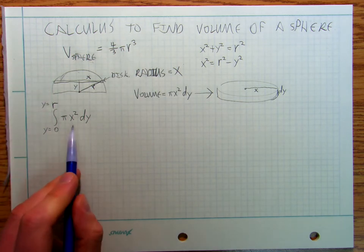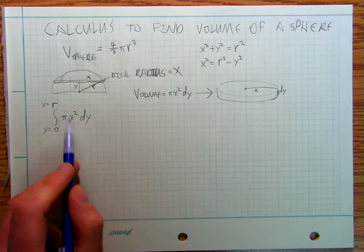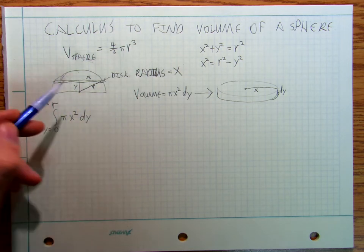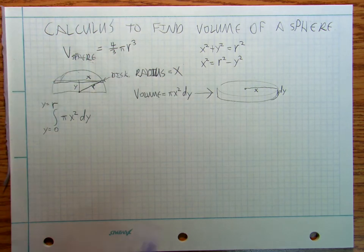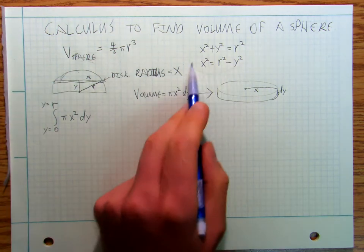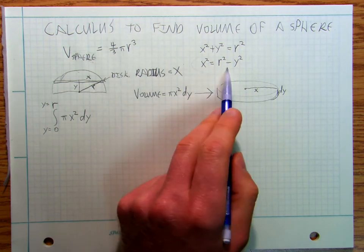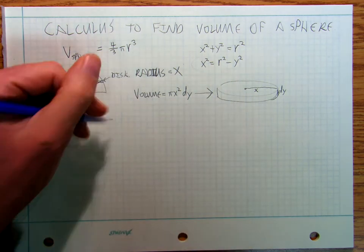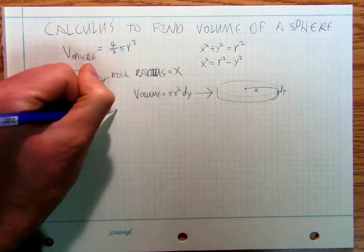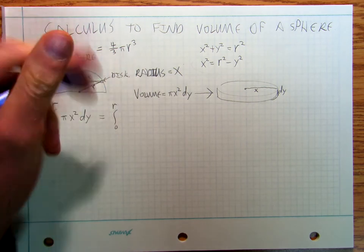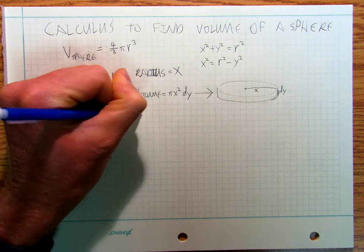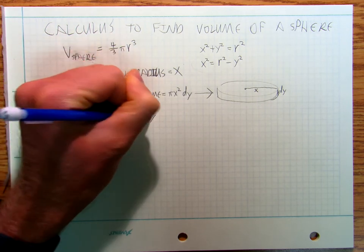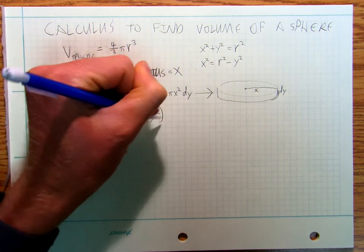And the radius of my disk, and so there's the volume of that disk, Pi x squared times dy, times that little bit dy, and then I can replace my x squared with this up here. So I can rewrite it as integral from zero to r, Pi r squared minus y squared dy.